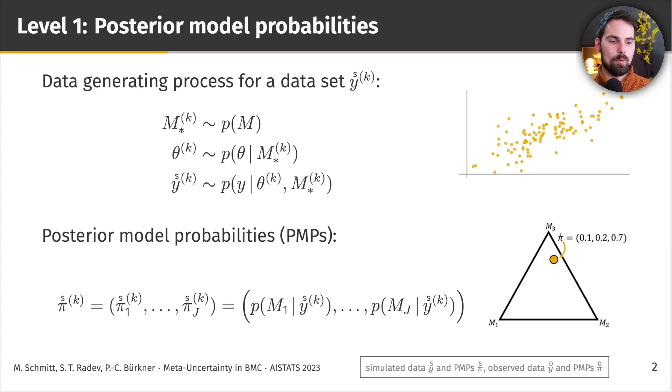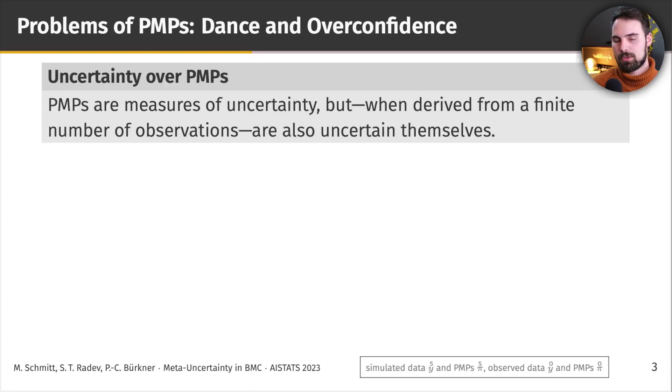So if we have three models and a fixed data set y, then one example of such a vector of posterior model probabilities could look like the one here on the right in the triangular visualization, where, for a fixed data set y, model 1 has a probability of 10%, model 2 a probability of 20%, and model 3 a probability of 70%. So it's seen naturally that this point in the triangle here lies closer to M3. We achieve this visualization by simply interpreting the posterior model probabilities as barycentric coordinates, but it's not that central here.